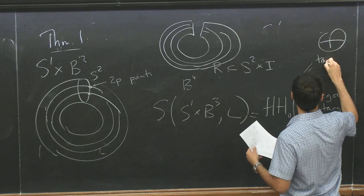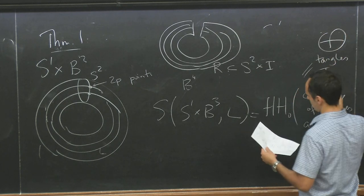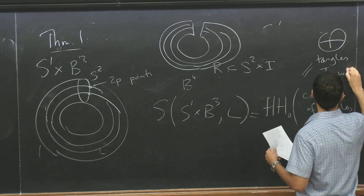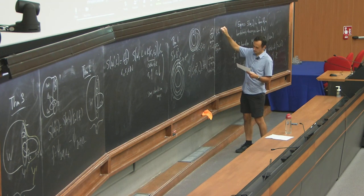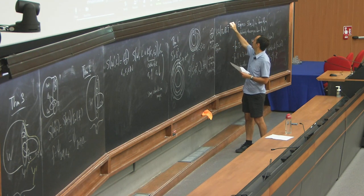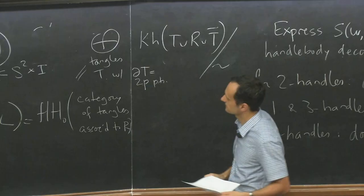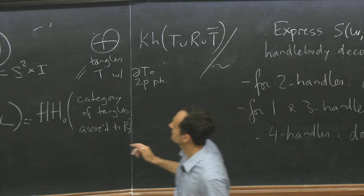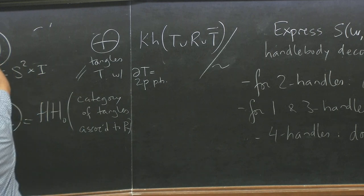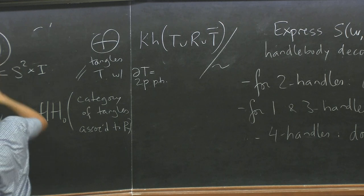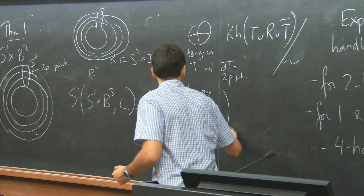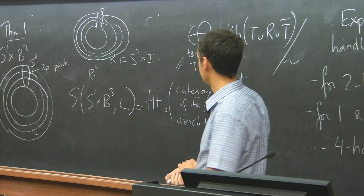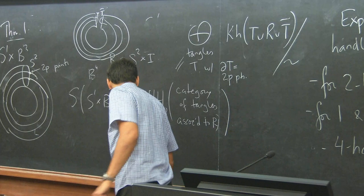Well, is some Hochschild homology of some category associated, category of tangles associated to R. Let me just put it like this. So this is some direct sum over all tangles T with boundary being two points of Khovanov homology of T union R union T bar, modulo sum equivalence relation.